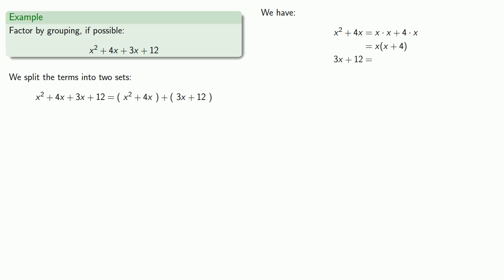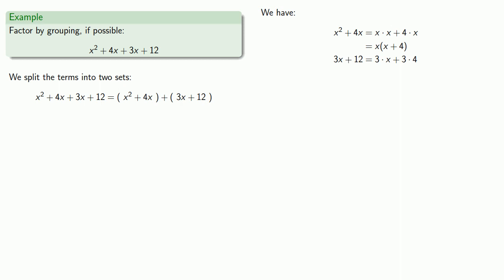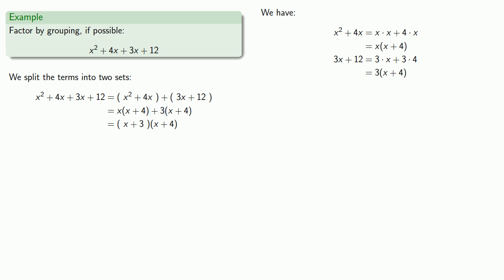In the second set of terms, 3x plus 12, both terms have a common factor of 3. So we can remove that common factor to get 3 times x plus 4. And so in our expression, both terms have a common factor of x plus 4. We can remove that common factor, and we had an x — we still have an x — we had a plus 3 — we still have a plus 3. And we get our factorization.